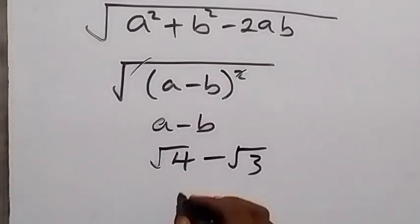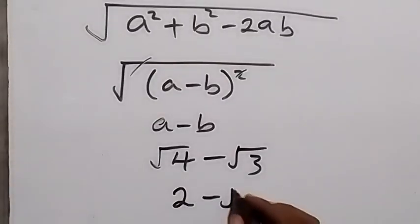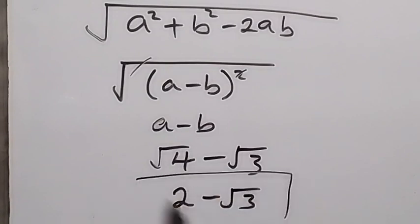√4 is 2, then minus √3. So therefore, the simplified form of that expression is 2 minus √3.